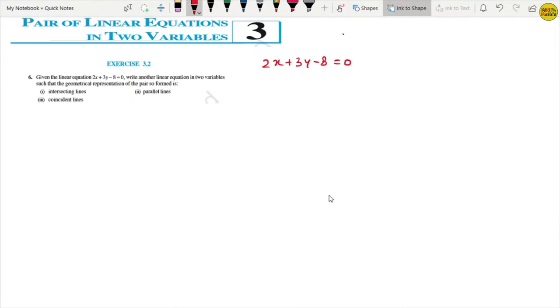The question asks for the geometrical representation of the pair formed to be intersecting lines. For intersecting, we know that a1 by a2 is not equal to b1 by b2. So we need to write an equation with a1 by a2 and b1 by b2.